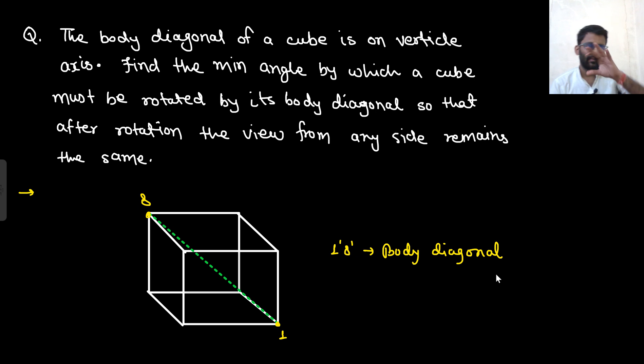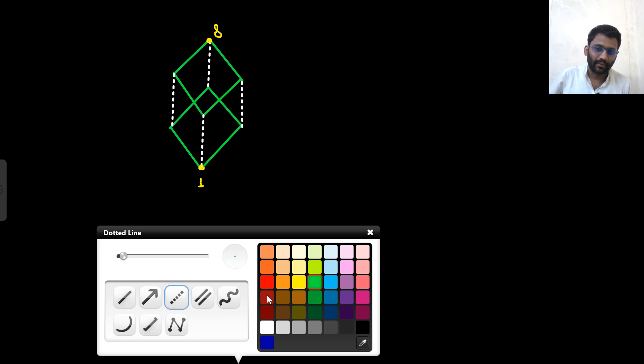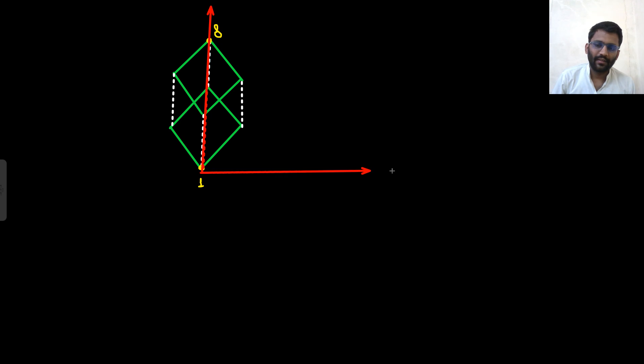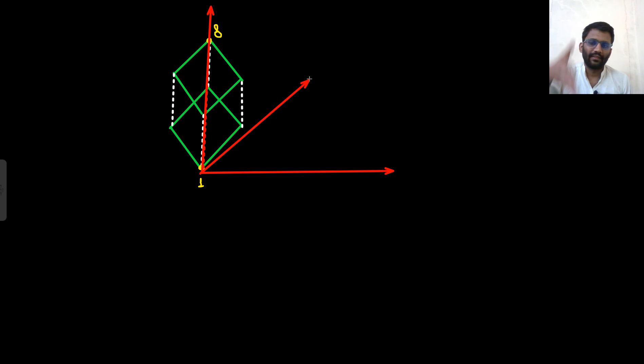Now you have to keep this cube such that the body diagonal is on the vertical axis. Something like this — this is our point 1 and this is our point 8. You have to visualize it in 3D. This will be your body diagonal from 1 to 8, on the perpendicular axis. This axis would be straight, and the cube would be oriented around it.